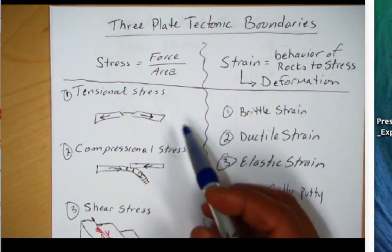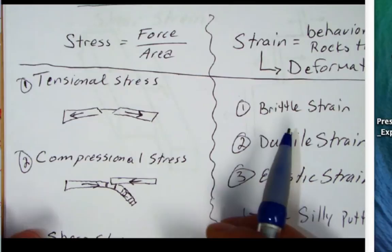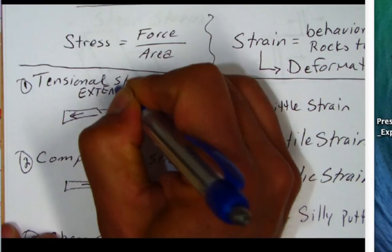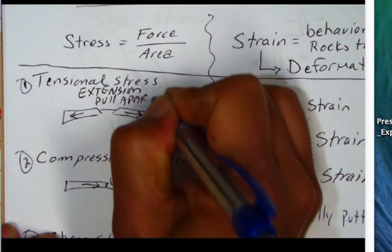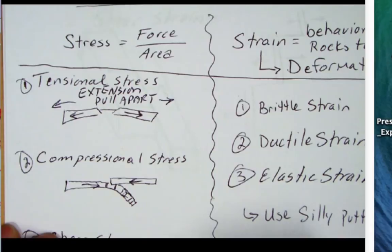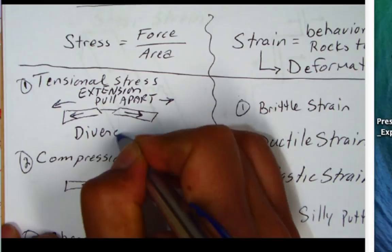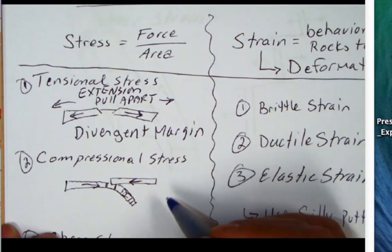The first is tensional stress, which deals with extension — you're pulling apart. These are common to mid-oceanic ridges where there's a divergence. We often call this a divergent margin. Divergent margins are classically associated with tensional stress, pulling apart.